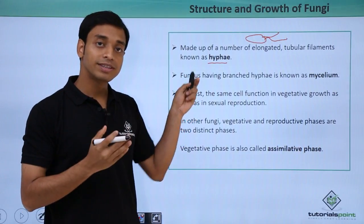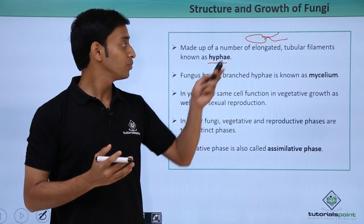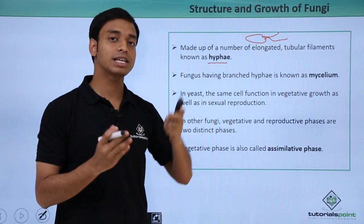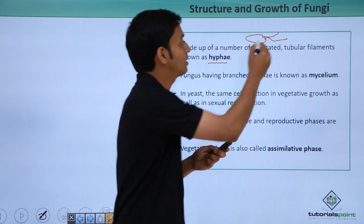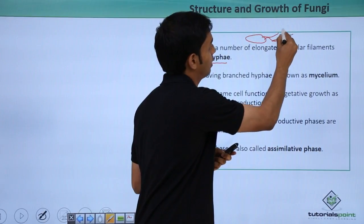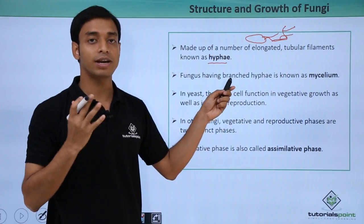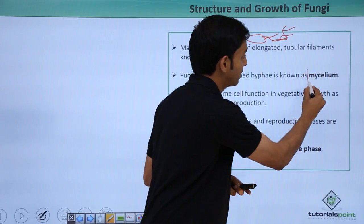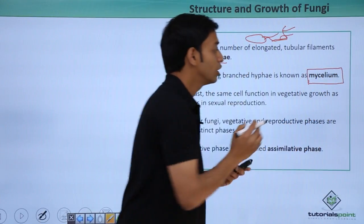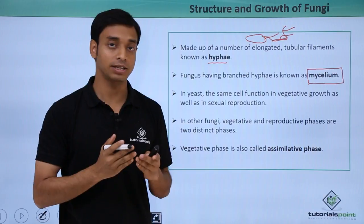Now, we are talking about a single filament. If these filaments are branched — that is, if they have branching structures — then these type of hyphae are given the term mycelium. So branched hyphae are termed mycelium.